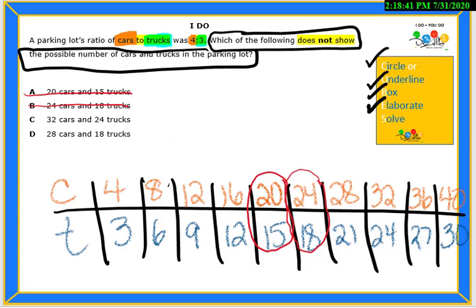C, 32 and 24. We look for 32 and it is with 24. So, we eliminate.